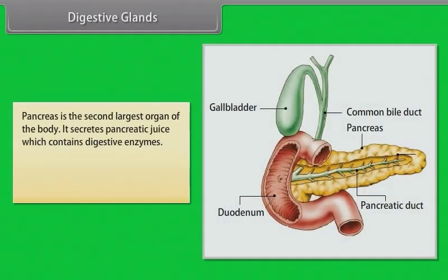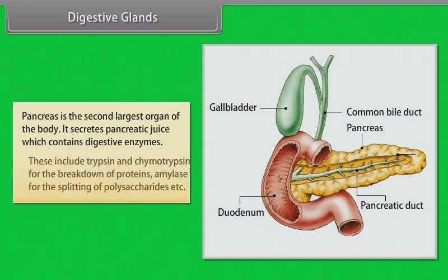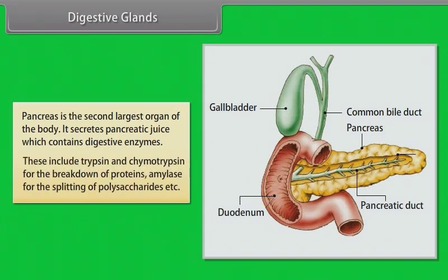The pancreas is the second largest organ of the body and secretes pancreatic juice containing digestive enzymes. These include trypsin and chymotrypsin for the breakdown of proteins, and amylase for the splitting of polysaccharides.